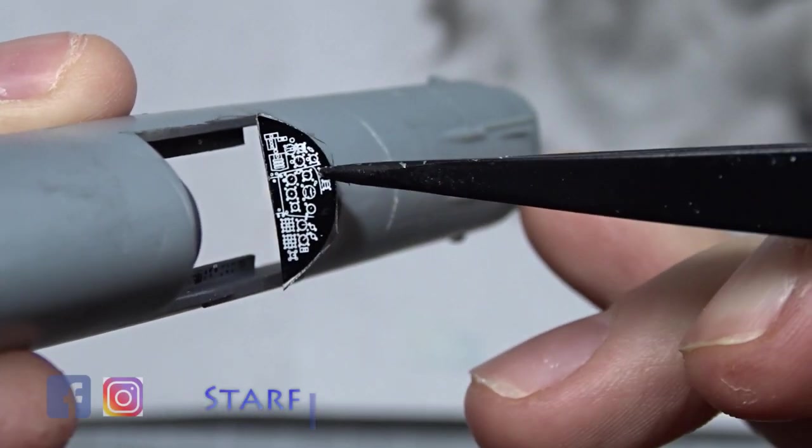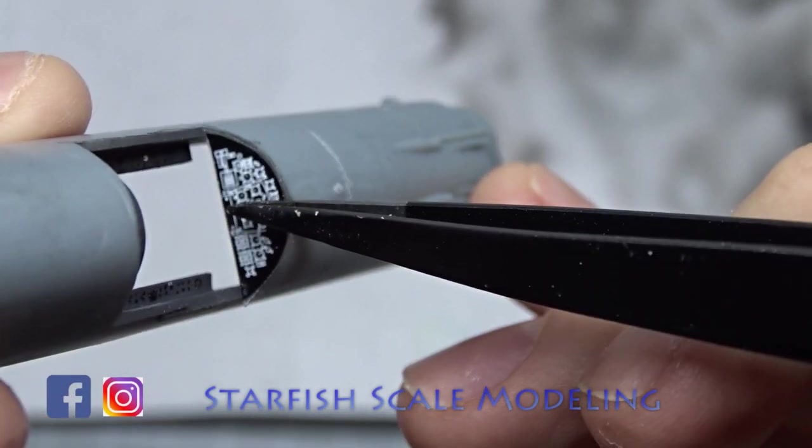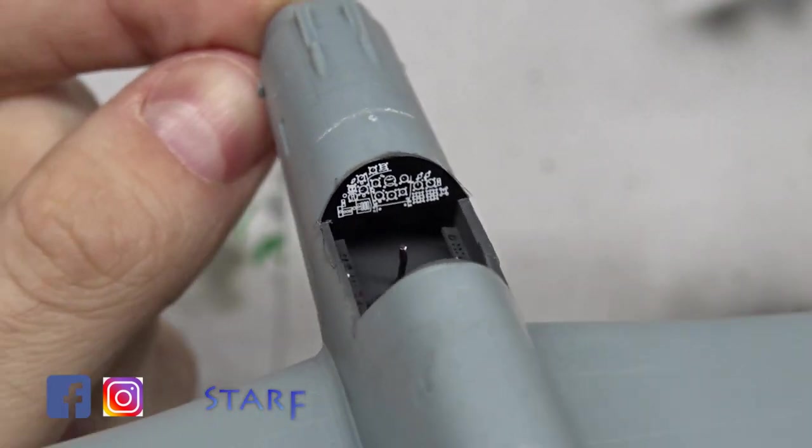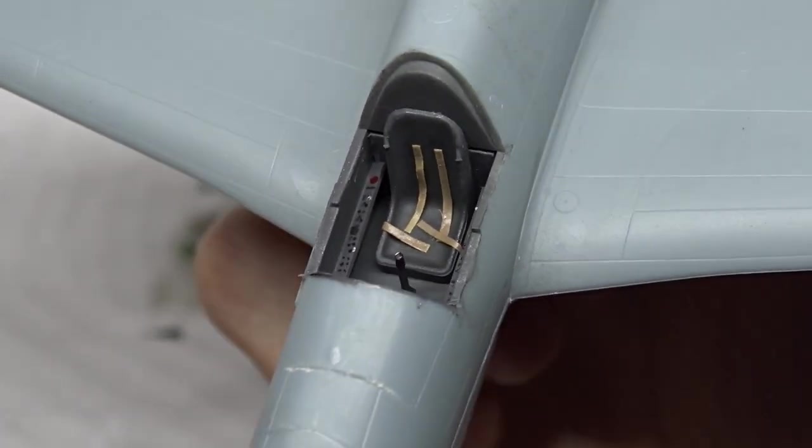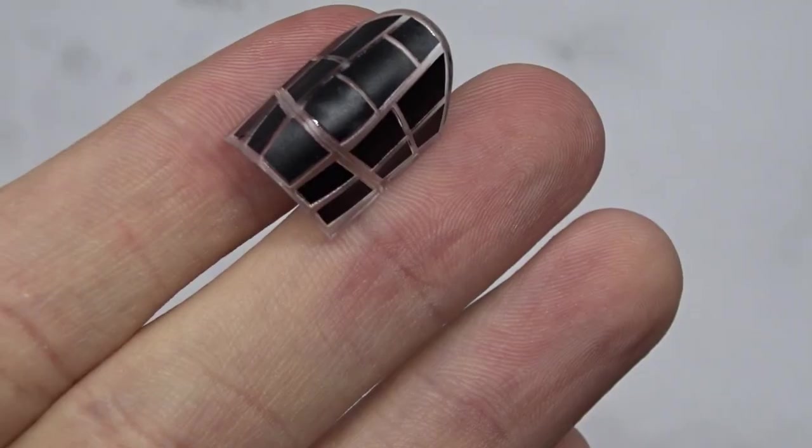There is one decal for the front instrument panel. The scratch-built side panels were painted using a fine panel liner. Now that I was more or less satisfied with the cockpit, I masked it off with these pre-cut masks, which saved me a lot of work.